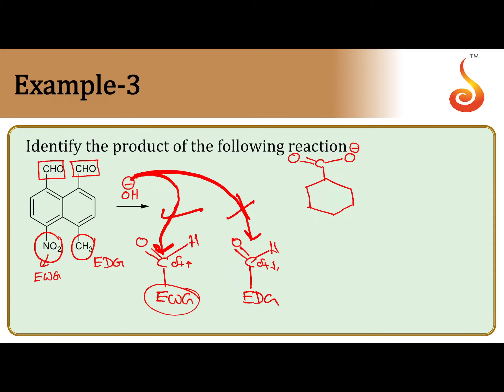Here, NO₂ is present, so the group which is connected to the electron withdrawing group will be oxidized preferably. At the other one, CHO will become CH₂OH with CH₃.